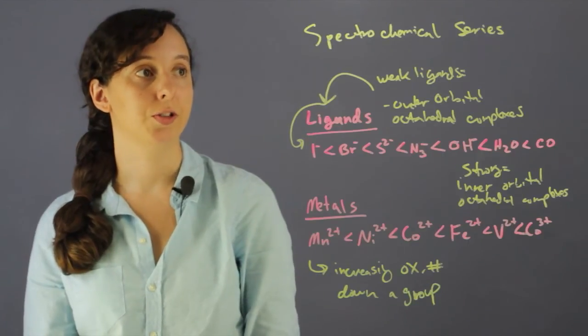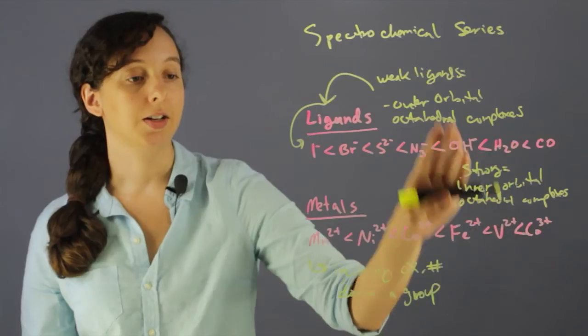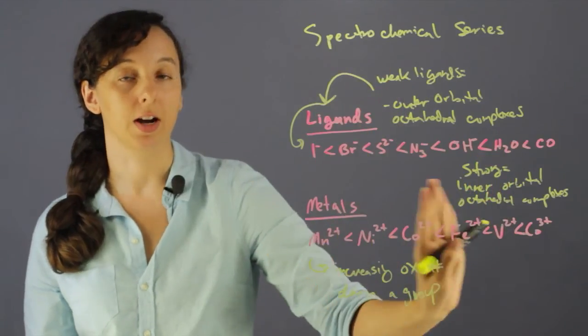So, spectrochemical series: basically a list of ligands from weak to strong, and a list of metals in increasing oxidation number.